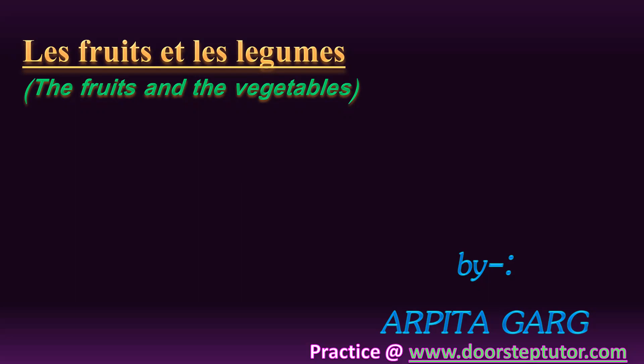Today we are going to learn the fruits and the vegetables. 'Fruit' — although the spelling is same as in English, the pronunciation is 'fruit' — means fruits. And 'légume' means vegetables. In this video we are going to learn the names of the common fruits and vegetables in French, along with the spelling and the pronunciation. So without wasting any time, let's begin.